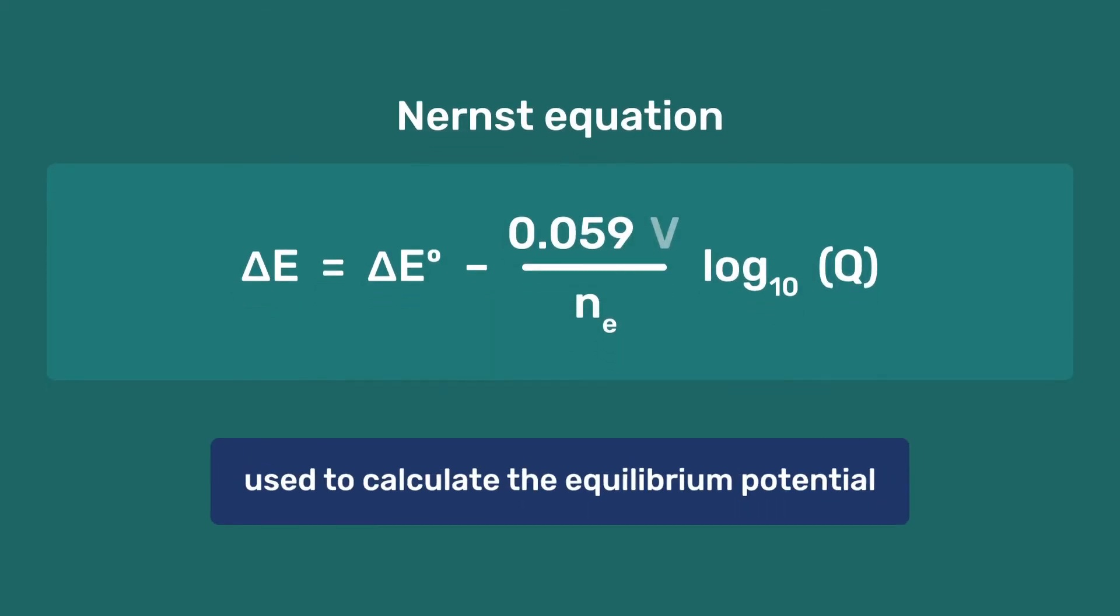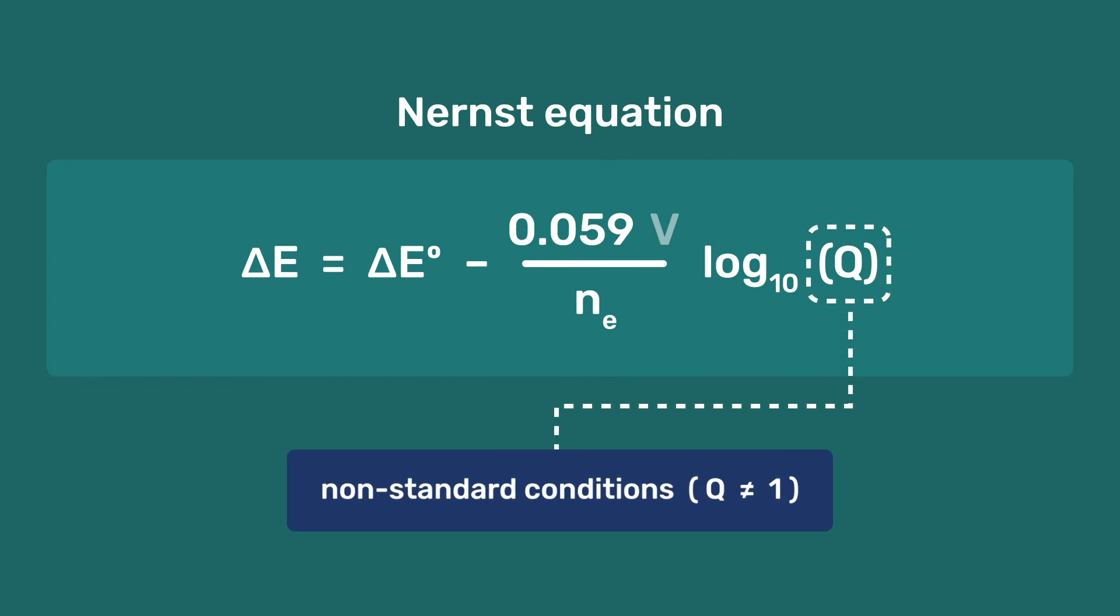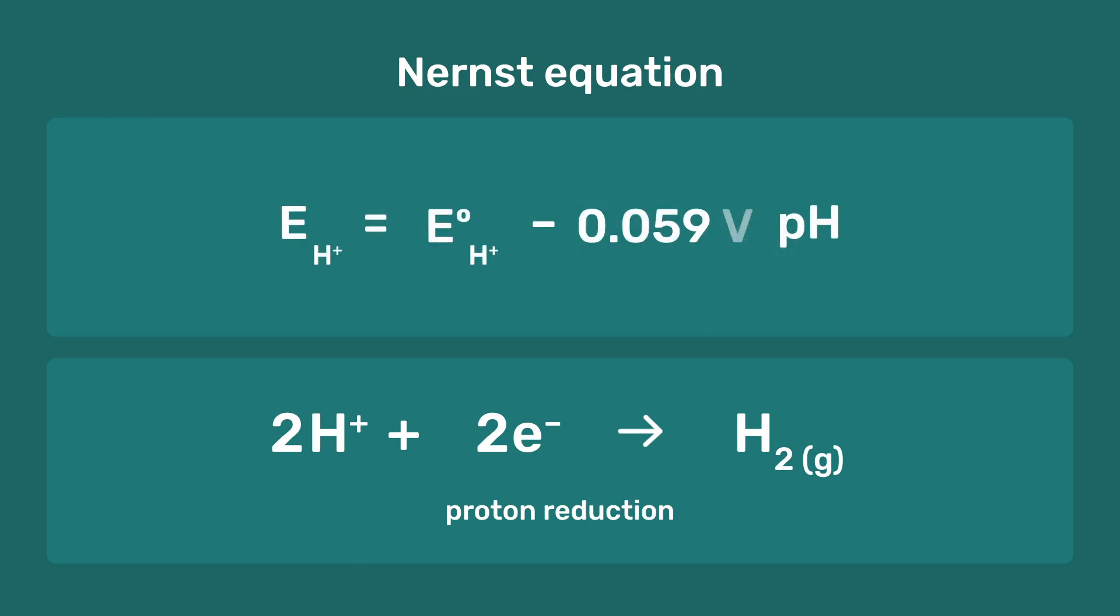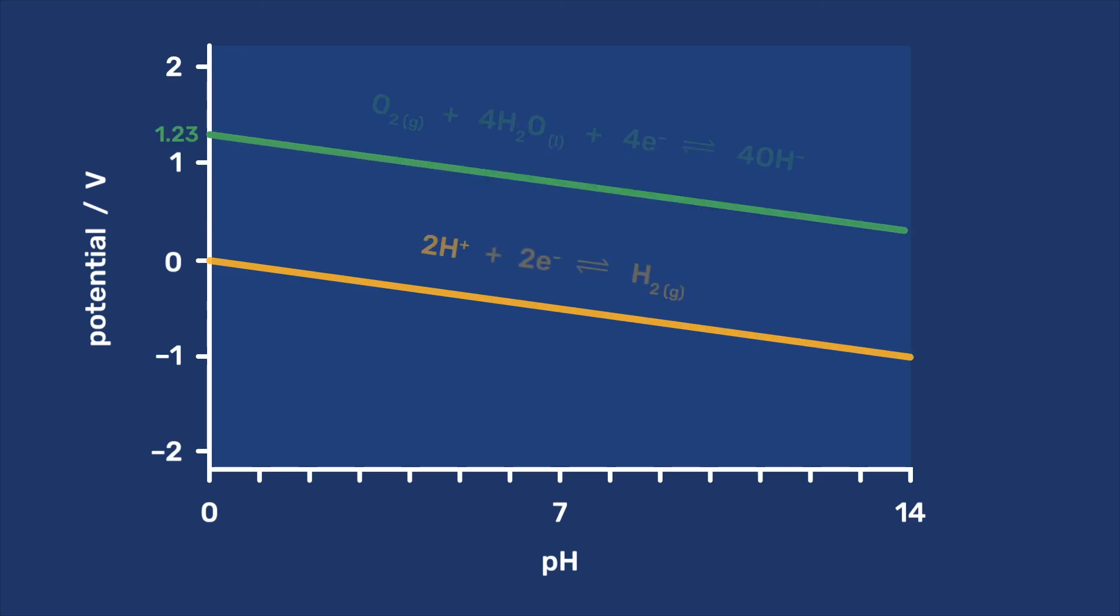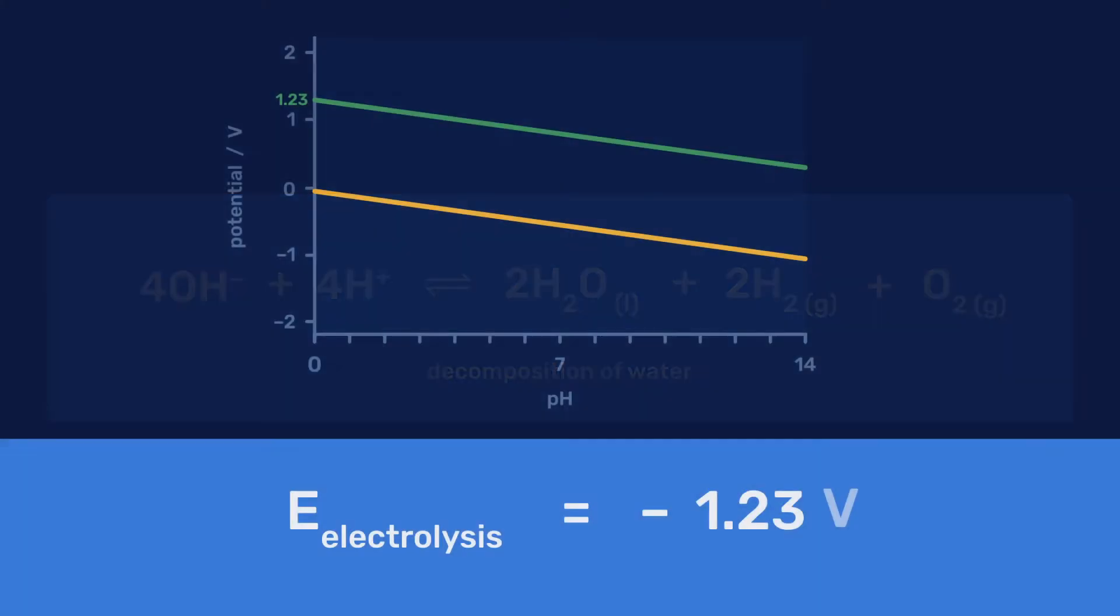In summary, the Nernst equation allows us to calculate the equilibrium potential of a half-cell for conditions deviating from standard conditions. As an example, for proton reduction, we can use the Nernst equation to take into account the effect of pH. This may be expressed graphically, plotting half-cell potentials versus pH, which is convenient for determining conditions allowing, or not, redox reactions to take place. We have applied this to the case of water and determined the potential needed to produce electrolysis.